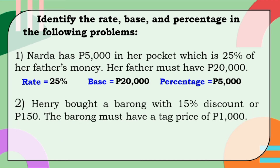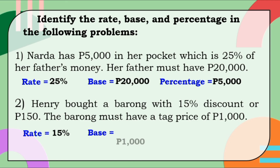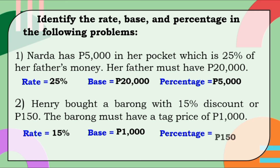Henry bought a barong with 15% discount or 150 pesos. The barong must have a tag price of 1,000 pesos. Ang rate ay 15% because of the percent sign. Base is 1,000 pesos kasi yan yung tag price — ibig sabihin hindi pa nababawasan. And percentage, we have 150 pesos — yan yung pinaka katumbas ng 15% discount.